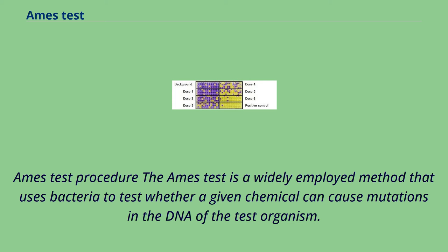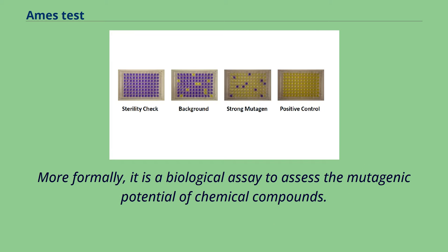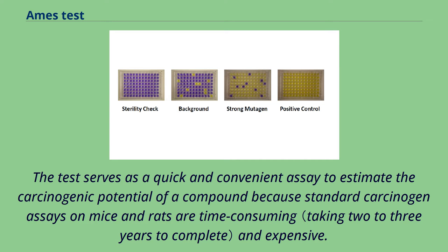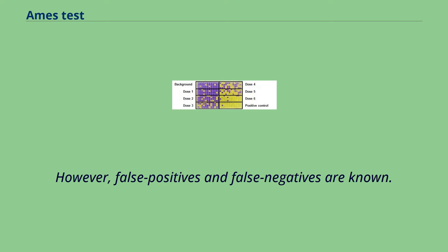The Ames test is used to test whether a given chemical can cause mutations in the DNA of the test organism. More formally, it is a biological assay to assess the mutagenic potential of chemical compounds. A positive test indicates that the chemical is mutagenic and therefore may act as a carcinogen, because cancer is often linked to mutation. The test serves as a quick and convenient assay to estimate the carcinogenic potential of a compound, because standard carcinogen assays on mice and rats are time-consuming and expensive. However, false positives and false negatives are known.